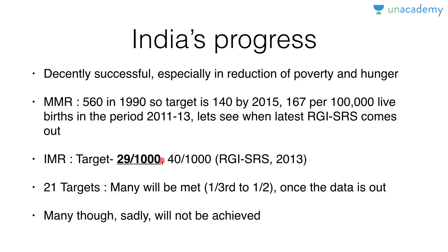For IMR, the target is 29 per 1,000 — we will slightly miss this goal because in 2013 the IMR was 40 per 1,000. Do not confuse it with the neonatal mortality rate, which is 28 in India's case. Neonate means up to 28 days; infant means up to one year of birth. Of the 21 targets, approximately 7 to 13 will be met once the data is out, and many will not be achieved.